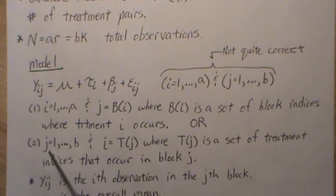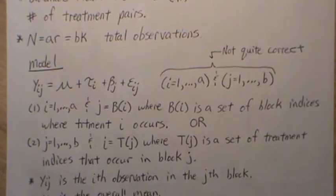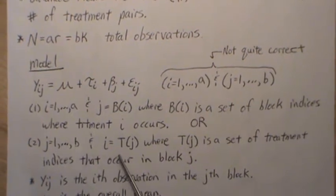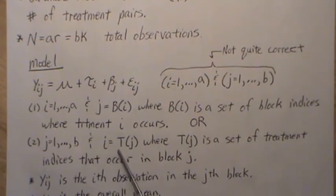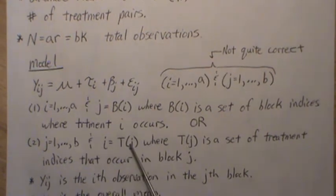The other one is we cycle J, so J equals one to B, and I equals T(j), where T(j) is a set of treatment indices that occur in block j. For instance, in the first block, J equals one, we have I equals T(j), so T(1), and the treatment assignments in block one could be one, three, four.